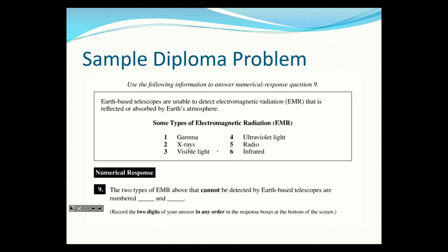The two types of EMR that cannot be detected by an earth-based telescope are the ones the atmosphere will block out - so it's going to be gamma and x-ray.